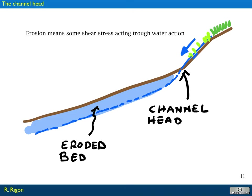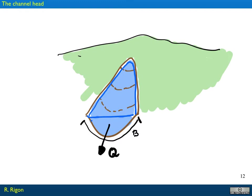Erosion means that some shear stress is acting through water action. In an idealized drawing of the landscape that Montgomery and Dietrich analyzed, you have water flowing inside the hill slope. At a certain moment the amount of water is such that it is acting as shear stress on the soil, destabilizing and eroding it. Another view of the same catchment shows the hill slope on top, then the channel head, and then the excavation eating into it during the storm.